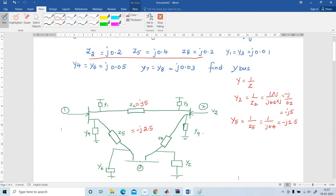And next I am going to find out Z8. So Y8 is equal to 1 by Z8, 1 divided by j0.2 again. The answer is minus j5. So Y8 is minus j5.